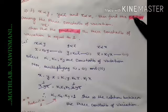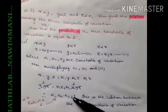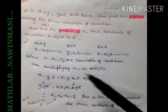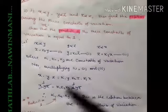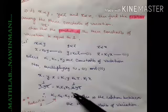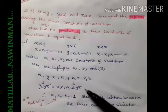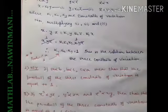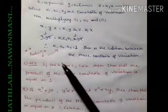That is the relation between the three constants of variation. If the question asks you to find the relation, write k1·k2·k3 = 1. If the question asks you to prove it, write that the product equals one — hence proved.